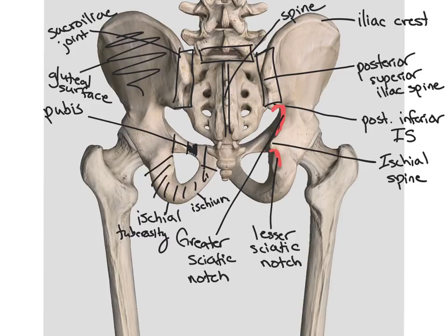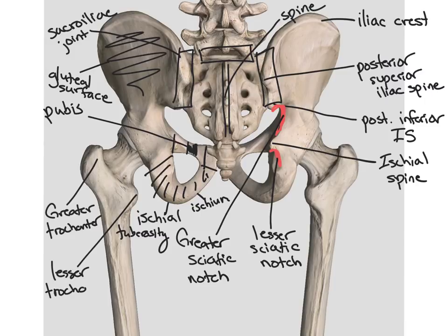Again we see our prominences of the femur: we have our greater trochanter, lesser trochanter, femoral neck, and the femoral head that fits in the acetabulum. We can also see our acetabular rim that sits around the outside of the femoral head.